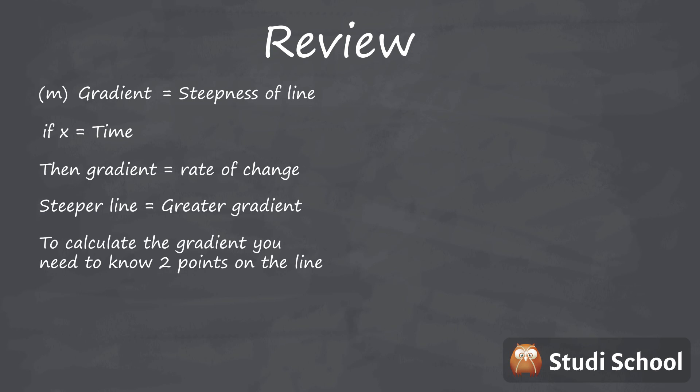To calculate the gradient of a line it is enough to know the position of two points on the line. You subtract the coordinates of one point from the coordinates of the other one. This gives you the proportional change between the two points.